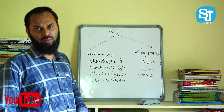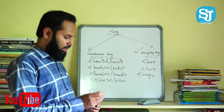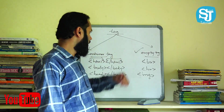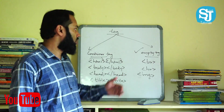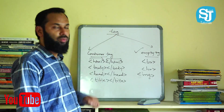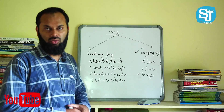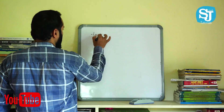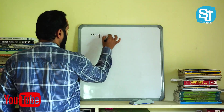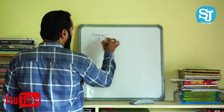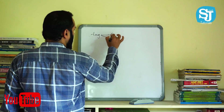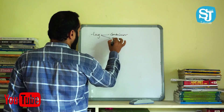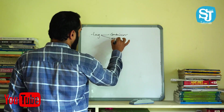If you look at different examples, what is a container tag and what is an MT tag — what are the different types of tags. If we have tags, we have two types: container tag and MT tag.